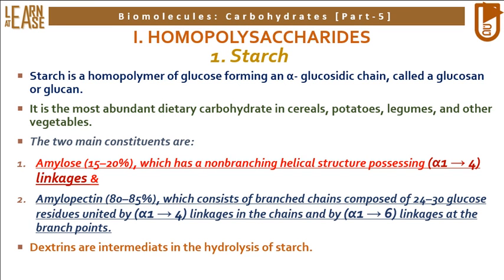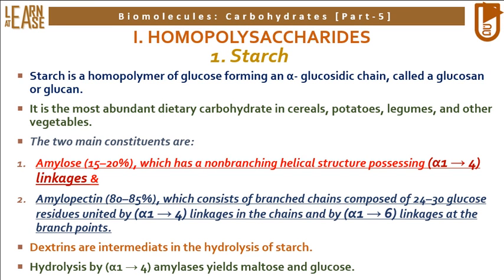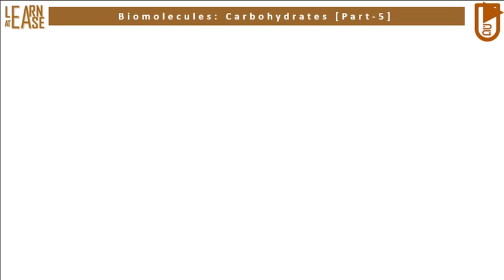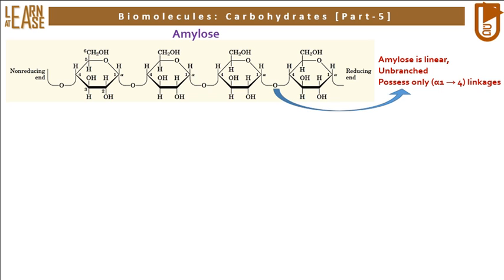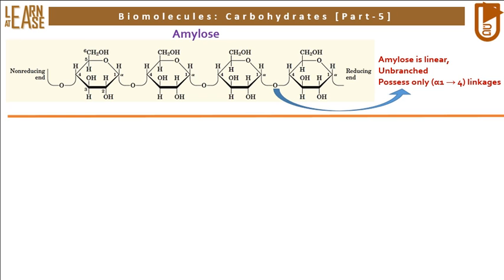Dextrins are intermediates in the hydrolysis of starch. Hydrolysis by alpha-1-4 amylases yields maltose and glucose. The image shows the unbranched polymer of amylose, where the glucose residues are linked to each other by alpha-1-4 linkages.